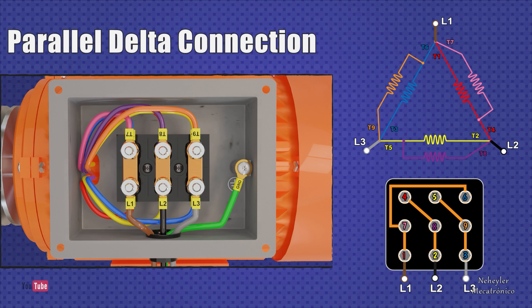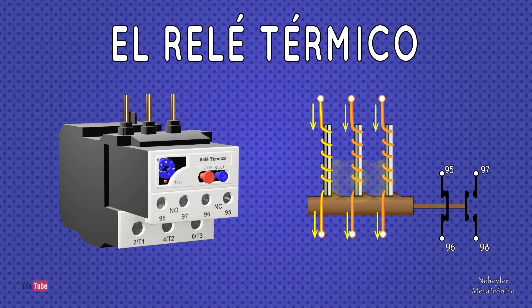So these two delta type configurations that you just saw are generally used in high power electric motors. Well, friends, this is the end of this explanation. Remember that on the channel you can find videos of contactors, thermal relays, PLCs, and more types of connections using wired logic.